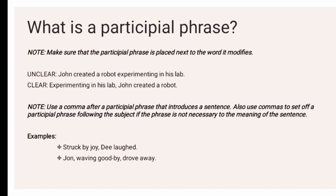For example: 'Struck by joy...' — struck is our participle and struck by joy would be our participle phrase, modifying G. And: 'John, waving goodbye, drove away.' Waving goodbye is our participle phrase — waving is the participle, and waving goodbye is the complete participle phrase modifying John.